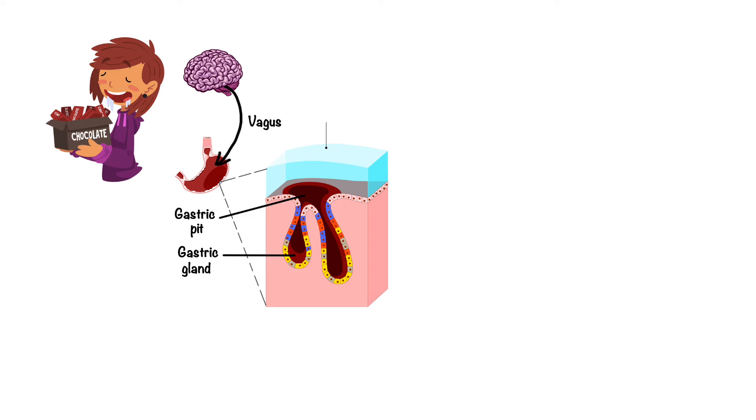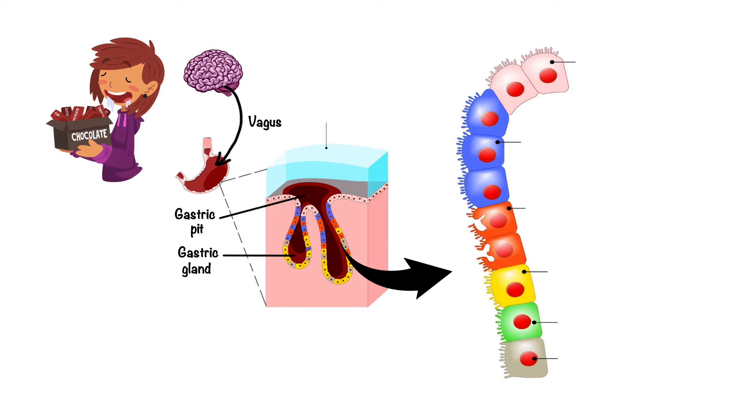There are a few different types of cells that make up the gastric glands. Surface and neck mucous cells produce jelly-like substance called mucus that protects the lining of the stomach.